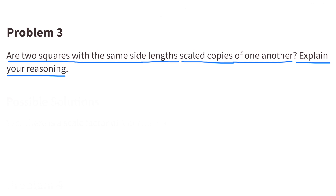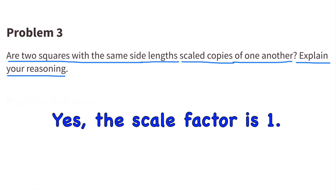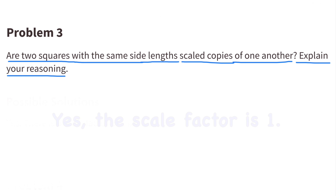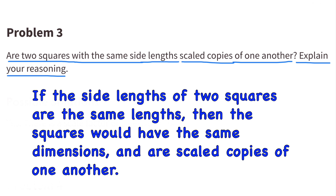Number 3. Are two squares with the same side lengths scaled copies of one another? Explain your reasoning. Yes, the scale factor is 1. If the side lengths of two squares are the same lengths, then the squares would have the same dimensions and are scaled copies of one another.